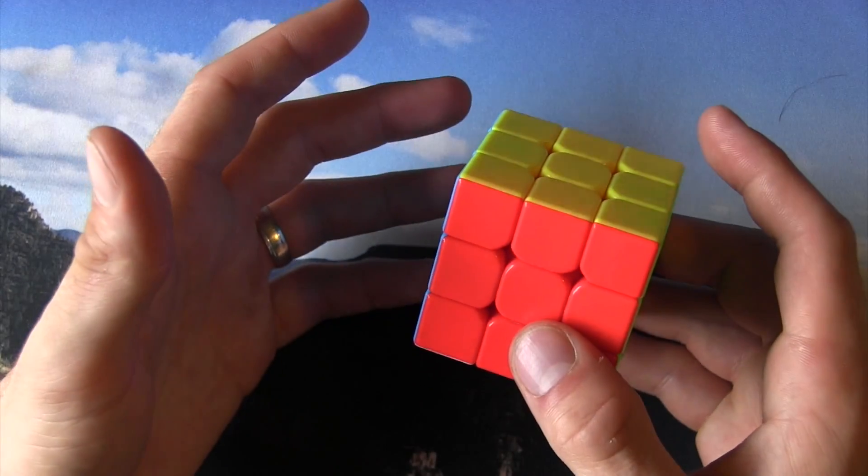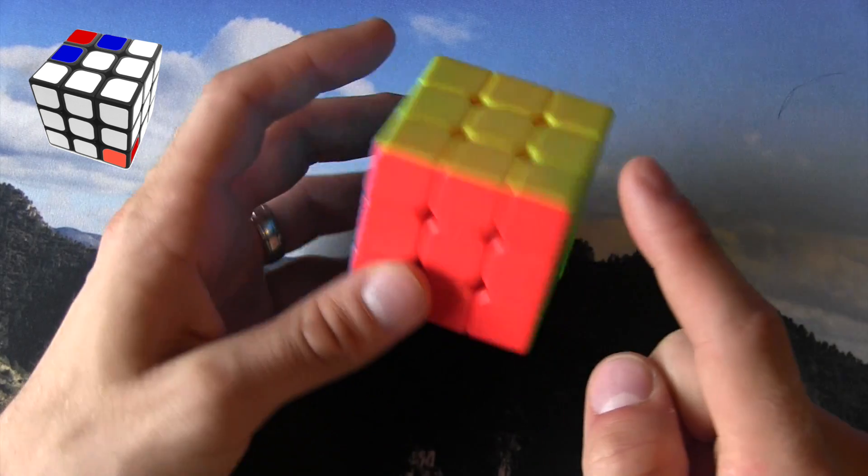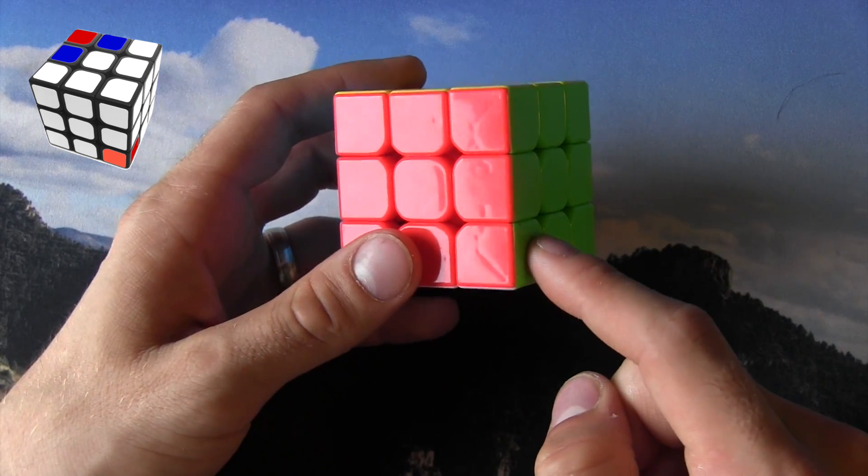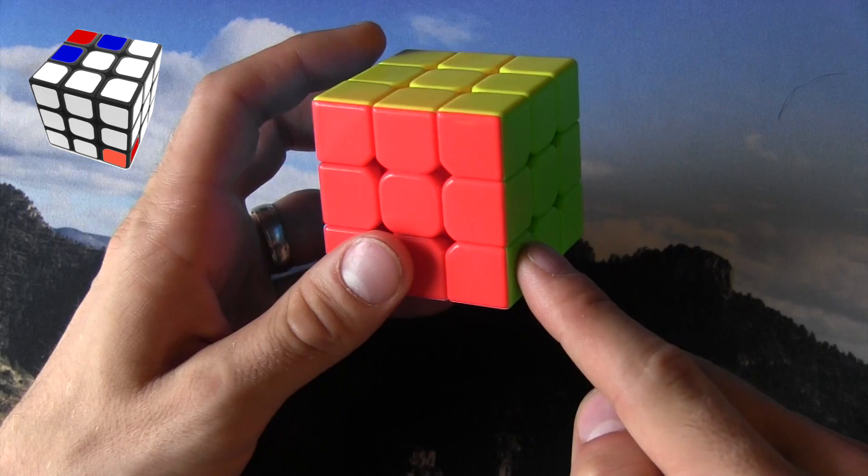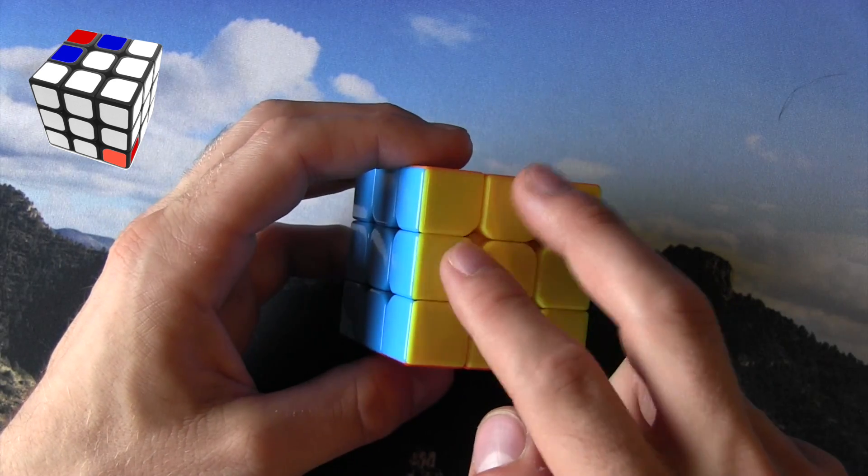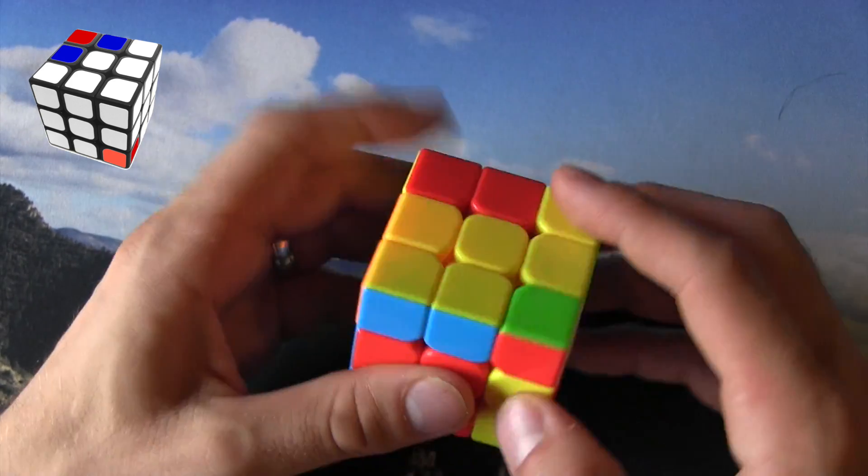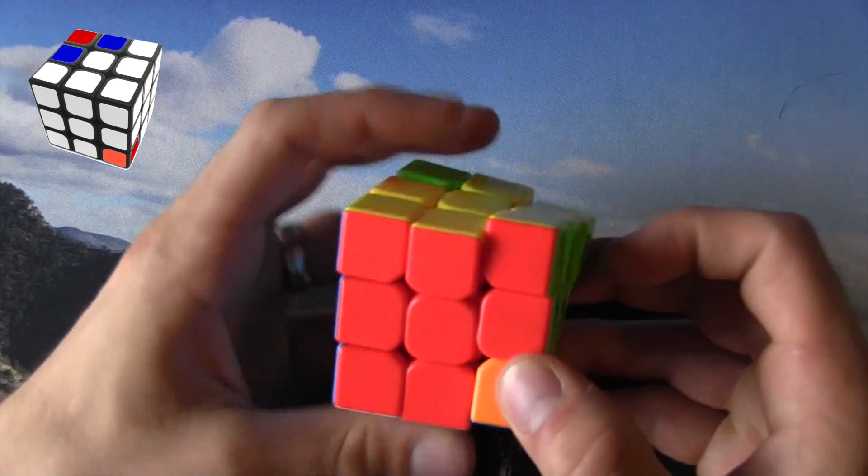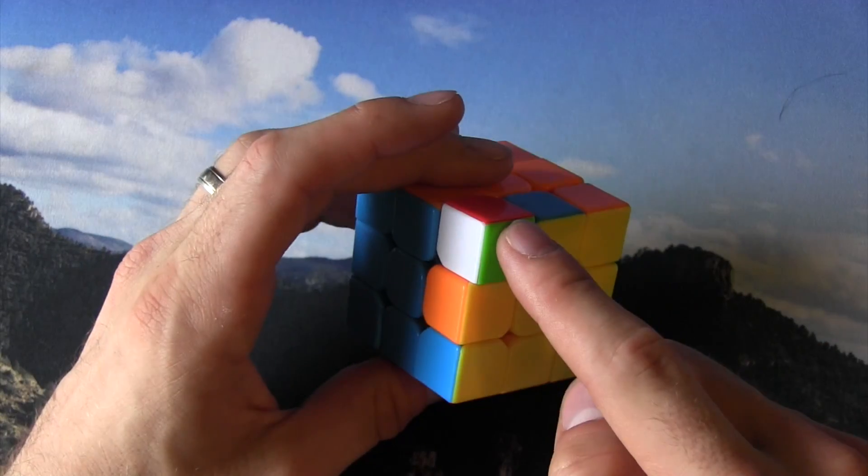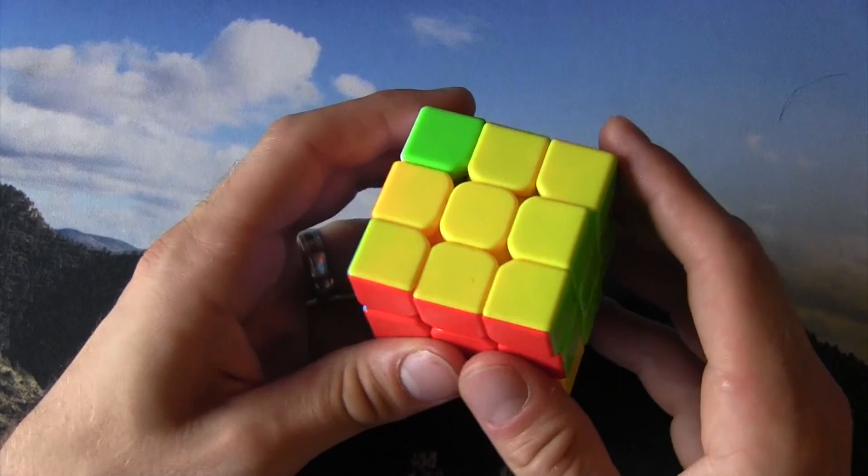Because when you're solving corners, you're swapping this piece and this piece. You can't just swap two corners though. We're also swapping these two edges. So when I do this, you can see that piece and that piece switched, as well as these two edges.